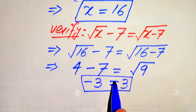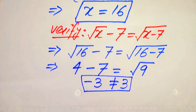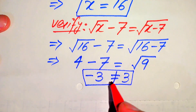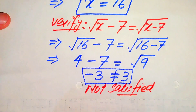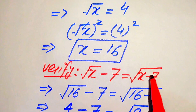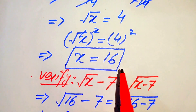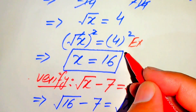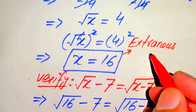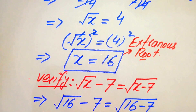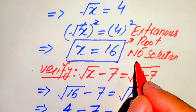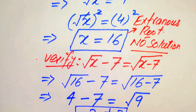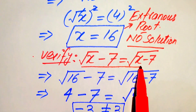Here we see that minus 3 is not equal to plus 3. This means that the value x equals 16 does not satisfy our given equation statement. Since this value of x does not satisfy our given equation, this means it is an extraneous root. We can say that x equals 16 is the extraneous root. Since this is an extraneous root, this equation has no solution — our given equation does not have a solution, or in other words, this equation has no solution.